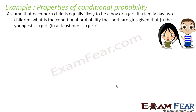Let's take one more example. We assume each born child is equally likely to be a boy or a girl — so there's a 50% chance the newborn baby is a boy and 50% chance it is a girl. If a family has 2 children, what is the conditional probability that both are girls, given that the youngest is a girl, and secondly given that at least one is a girl?